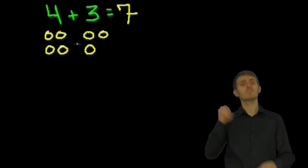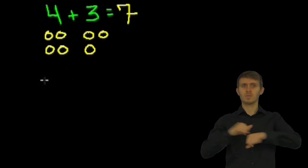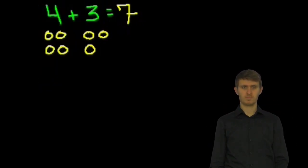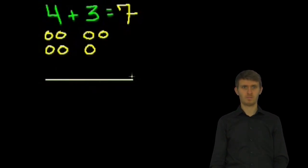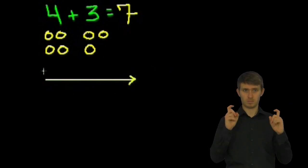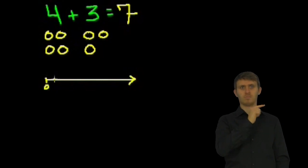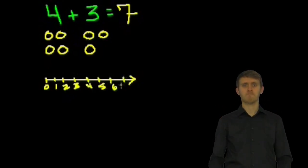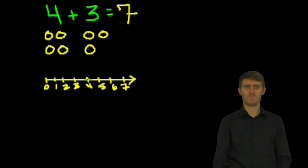Another way we could have viewed that is we could have drawn our number line. I'll draw it in yellow because we're talking about lemons. So let's say that's our number line. And if I start at the number, let me draw all of the numbers. 0, 1, 2, 3, 4, 5, 6, 7.